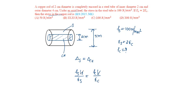Lengths are same. Stress in steel is given as 100 by Young's modulus of steel is 2 times Young's modulus of copper. It is equal to stress in copper by Young's modulus of copper. Young's modulus cancel. Stress in copper will be 50 N per mm square. Option A.